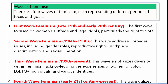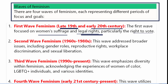First wave feminism — late 19th and early 20th century. The first wave focused on women's suffrage and legal rights, particularly the right to vote. First wave feminism का जो main focus था, वो था women's suffrage पर — महिलाओं को मत अधिकार होना चाहिए, मत देने का अधिकार होना चाहिए — और legal rights भी होनी चाहिए। Especially right to vote — महिलाओं के पास भी vote करने का हक होना चाहिए।